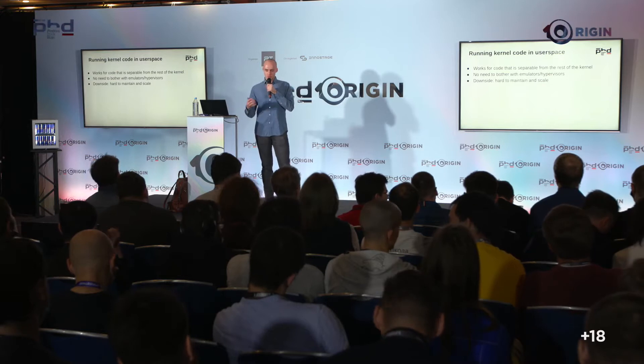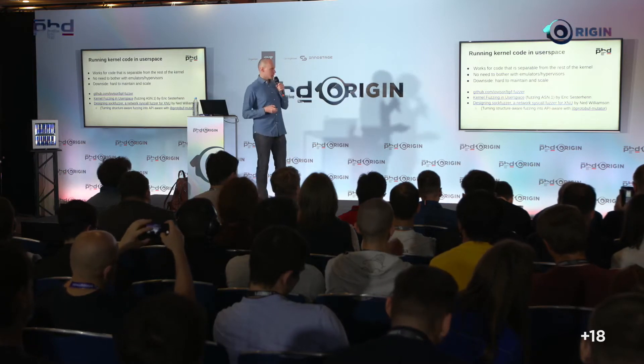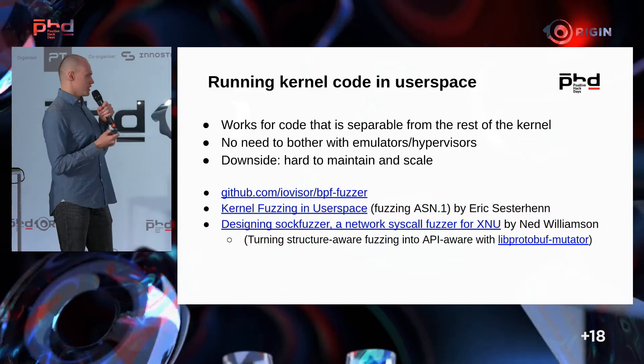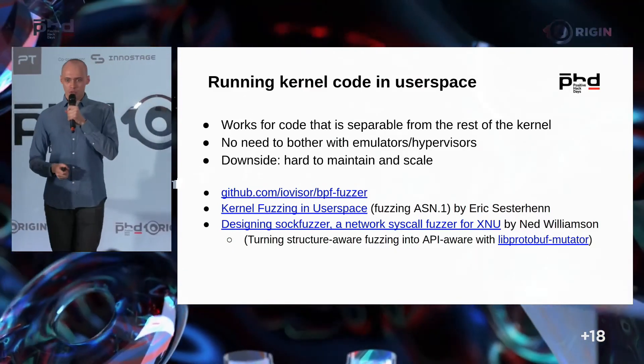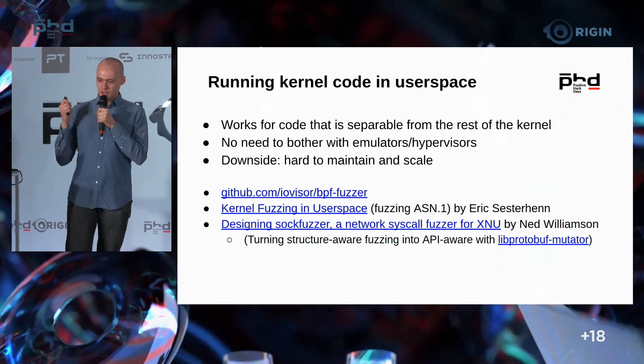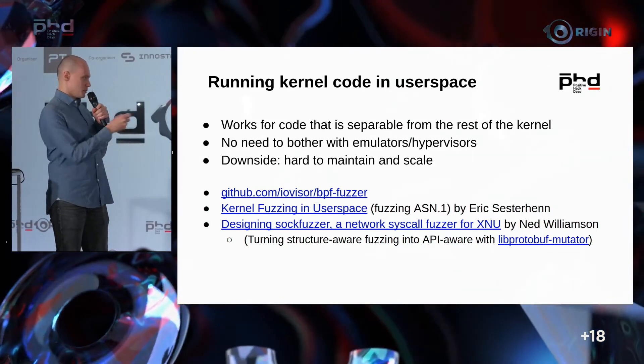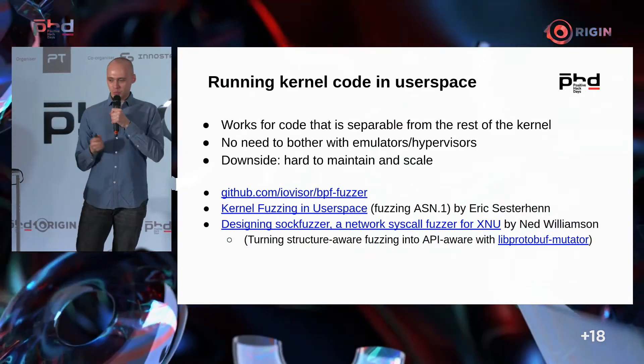The advantage of user space compilation is being able to reuse all our previous user space fuzzing ideas. The disadvantage is that when the extracted part is updated, it's very difficult to reproduce and automate. There are several examples of people doing this for the Linux kernel and also for the XNU kernel — the Apple kernel for iPhones and MacBooks. I recommend the article by Williams on this topic.